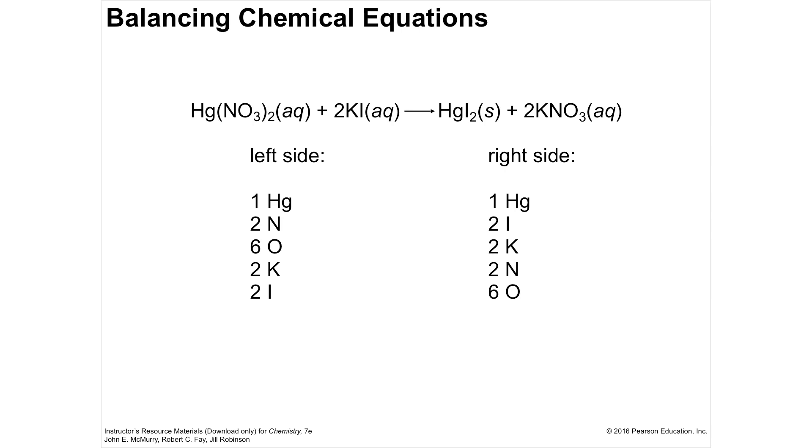So balancing kind of goes back and forth between the two. Make multiplying coefficients is all you can do. You can't do anything with the subscripts. You can only play with the coefficients to make sure that there's the same on both sides.